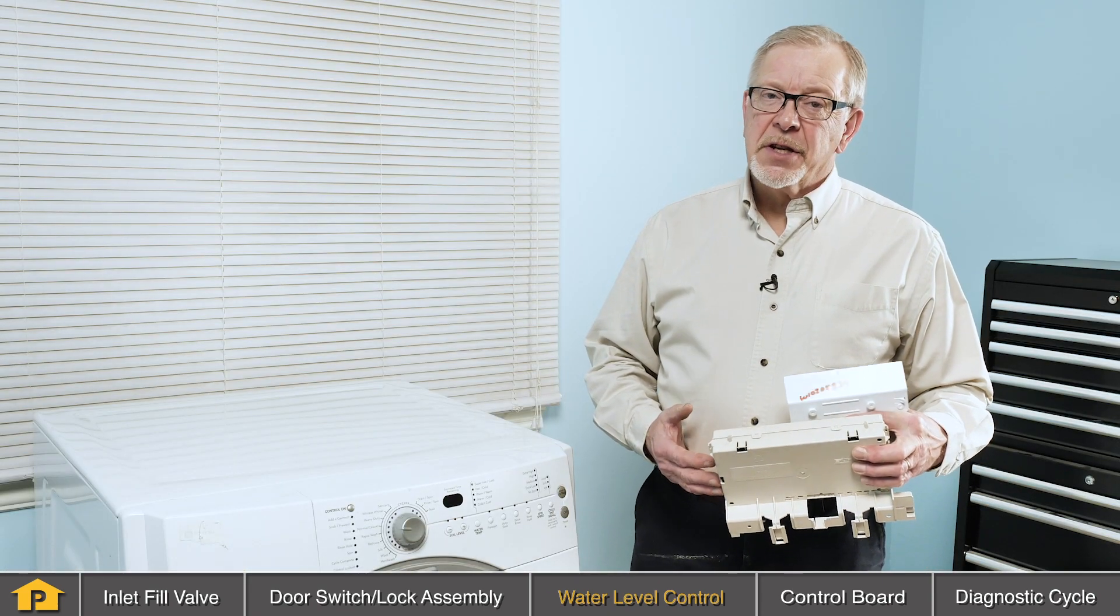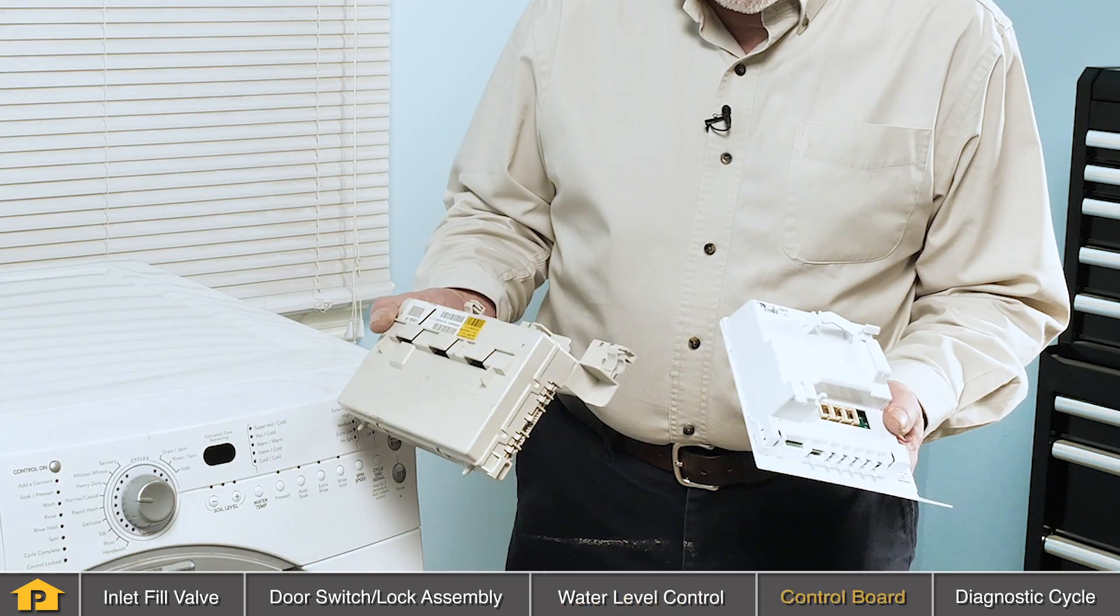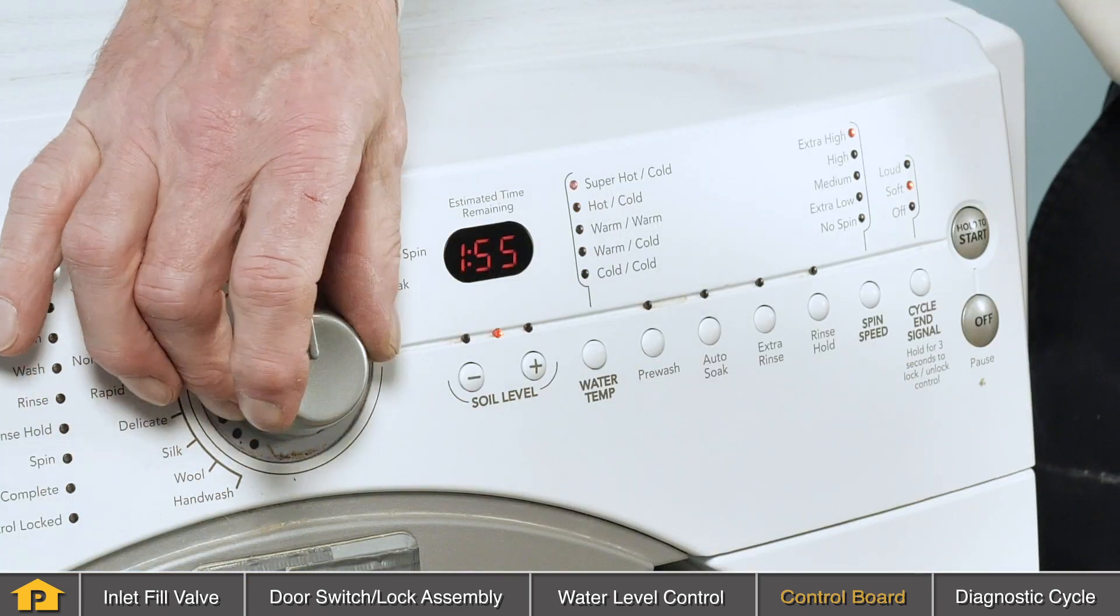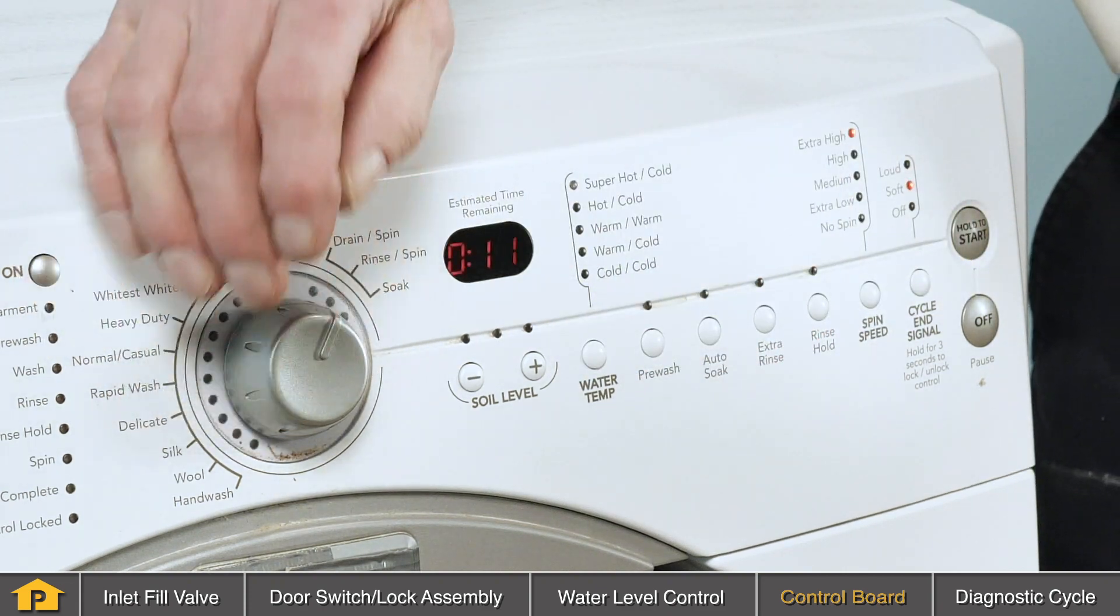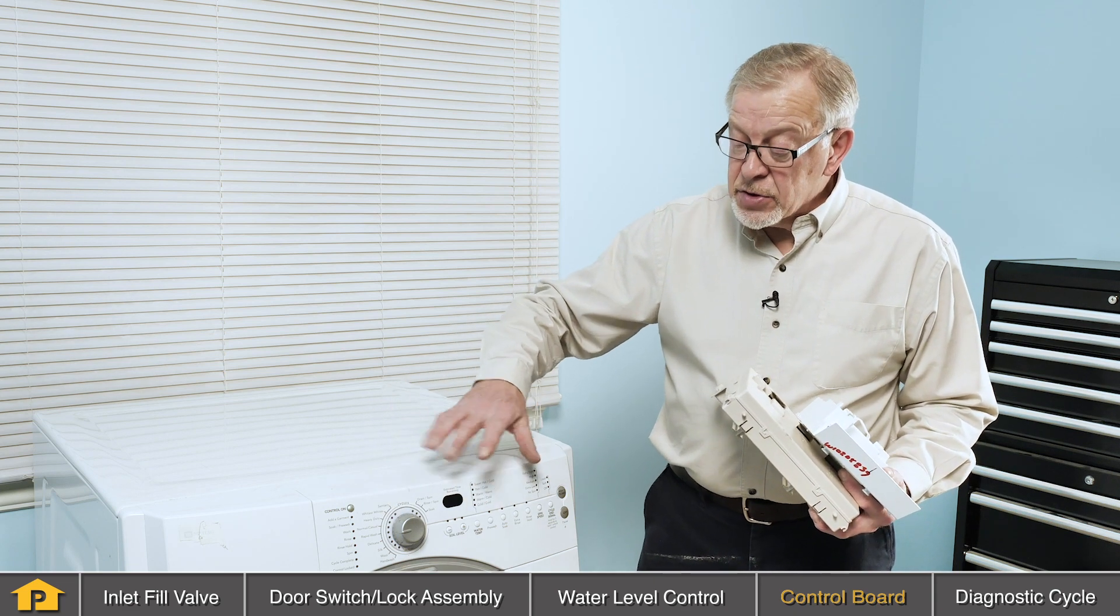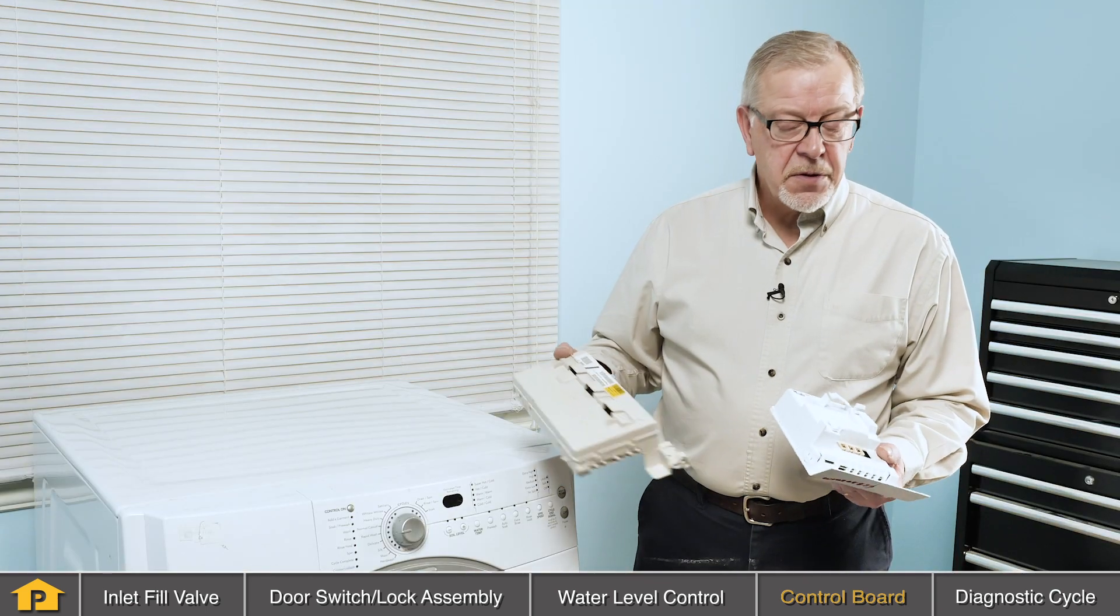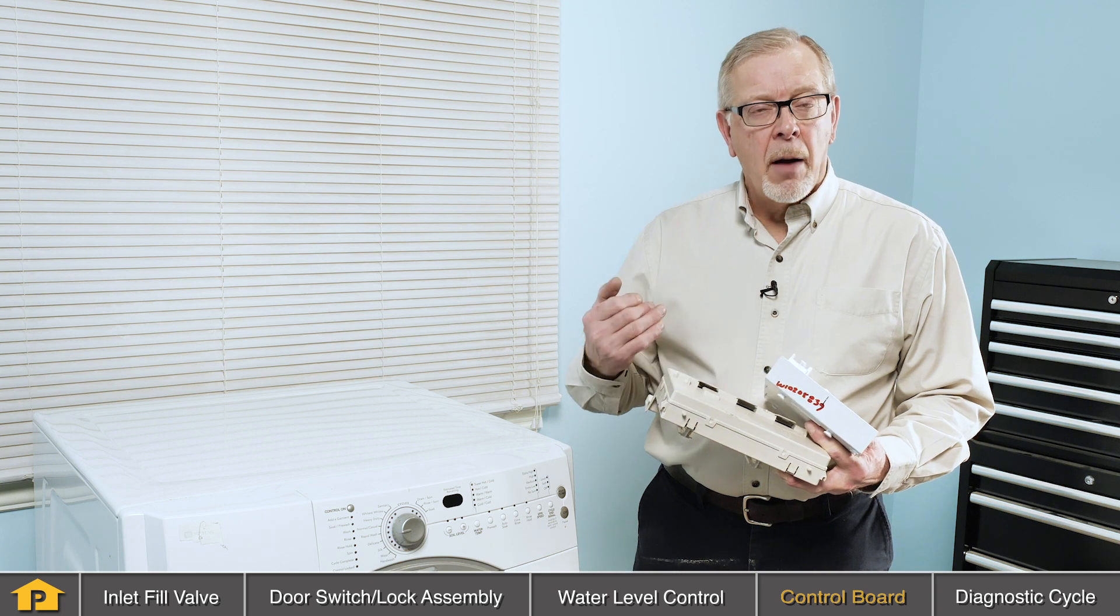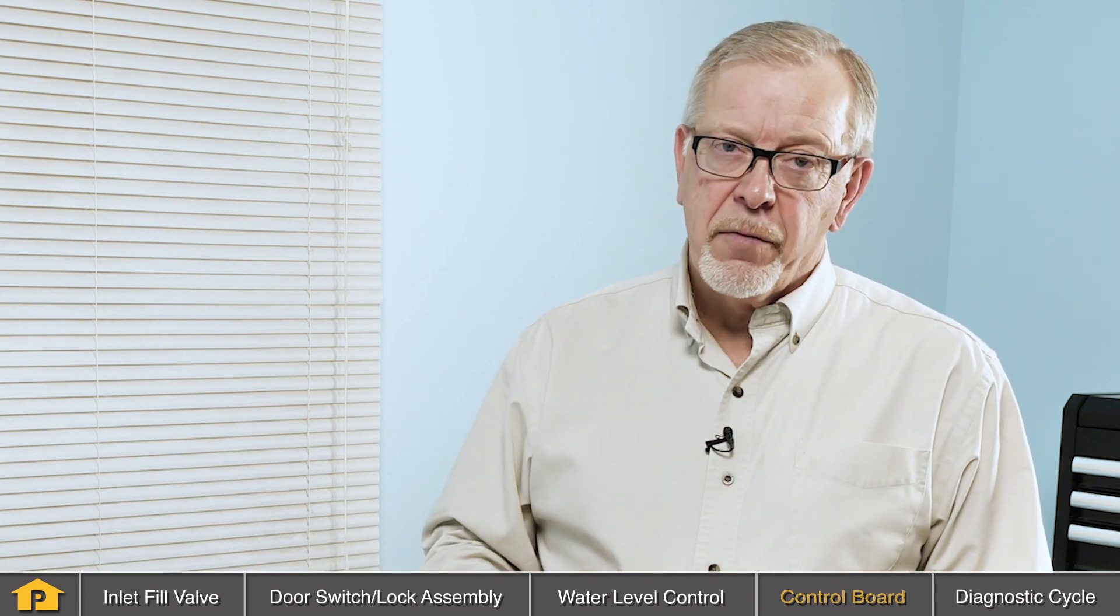Another component that may cause a no-fill condition in your front load washer is the actual control board. Control boards differ from user interface boards which are typically located right behind the console and that allows you to pick the individual cycles and the options that are available. If your washer allows you to select a cycle and any of the options, you can assume that the user interface board is working properly. All of those signals are sent back to the main control board where the functions are actually executed. This is the control board that operates the fill valve, the drain pump, and the motor and all of those functions. If this board fails, you may get a no-fill condition.